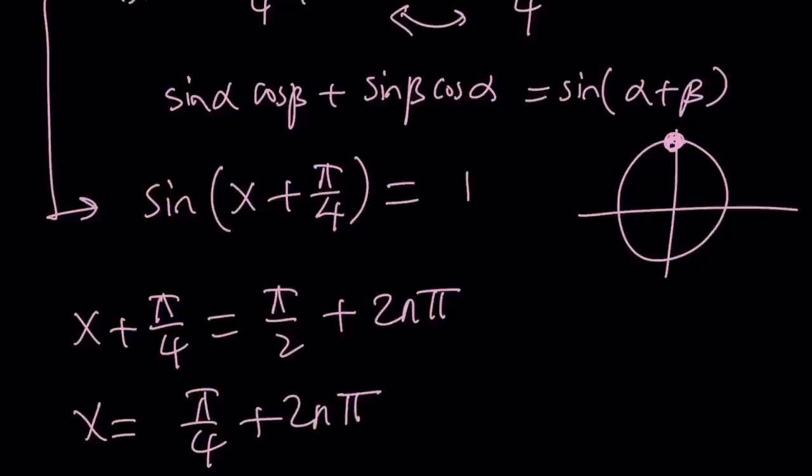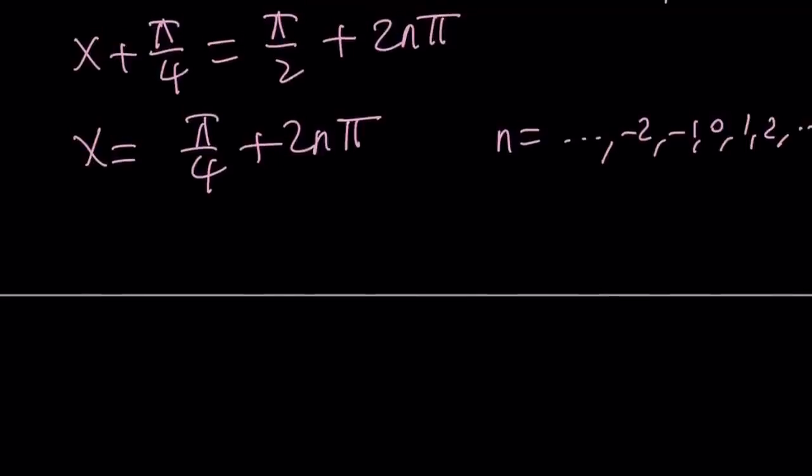We're going to get x equals pi over 4 plus 2n pi. Now if you go ahead and replace n with integers, it could be negative 2, negative 1, 0, 1, all the integers positive and negative and 0. So you're going to get all the values. For example and I'll show you a graph at the end which will kind of verify this.